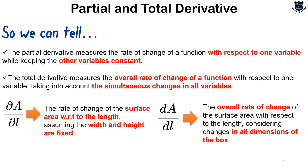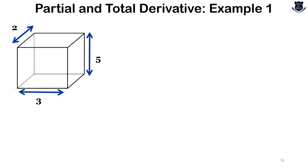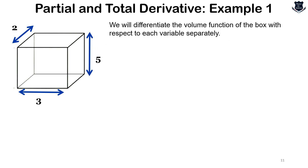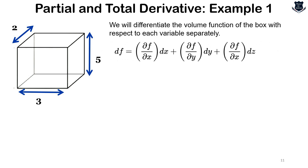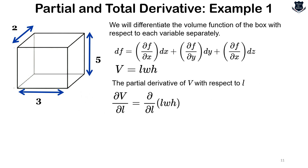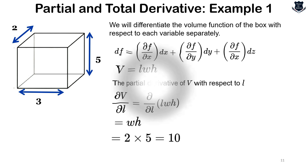Now let us see an example with actual values to make it easier. We will use the volume function of a box with length L = 3, width W = 2, and height H = 5. The volume is V = L × W × H. The partial derivative of V with respect to L gives the rate of change of volume with respect to L, so we plug in W × H = 2 × 5 = 10. Similarly, del V by del W gives L × H = 3 × 5 = 15.